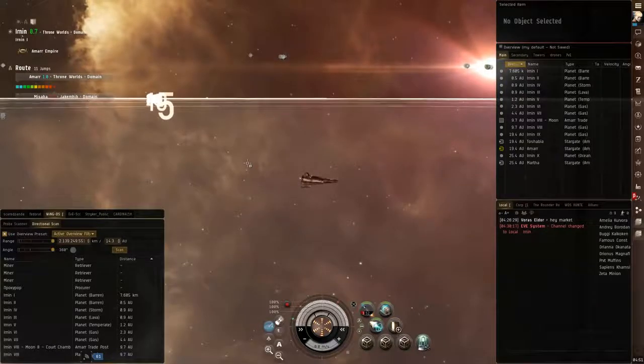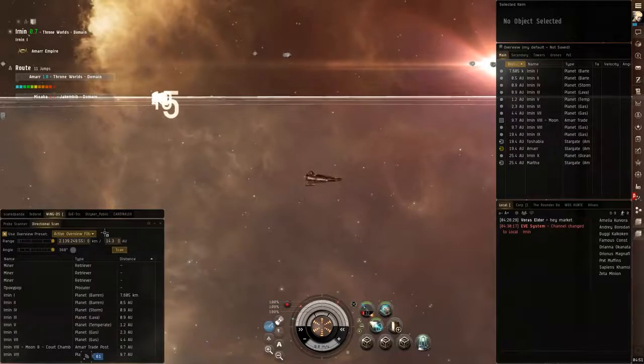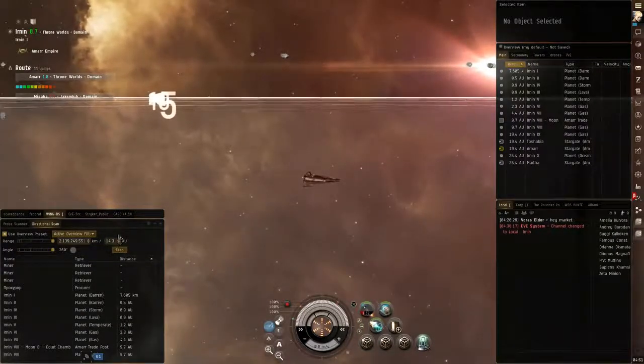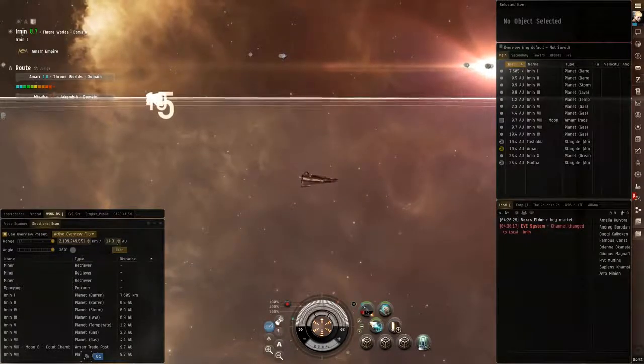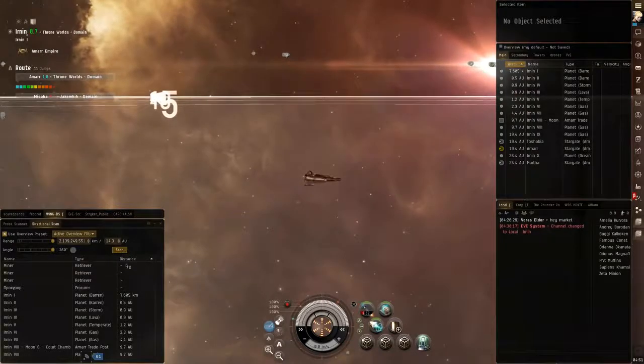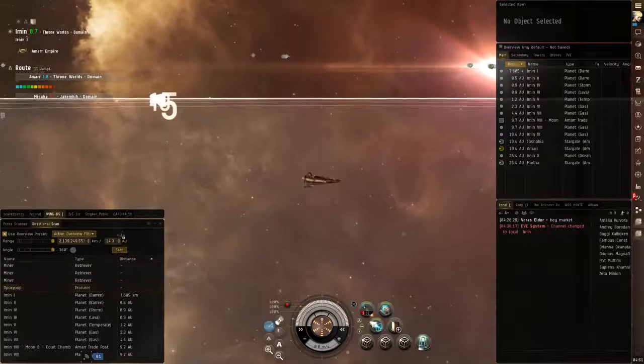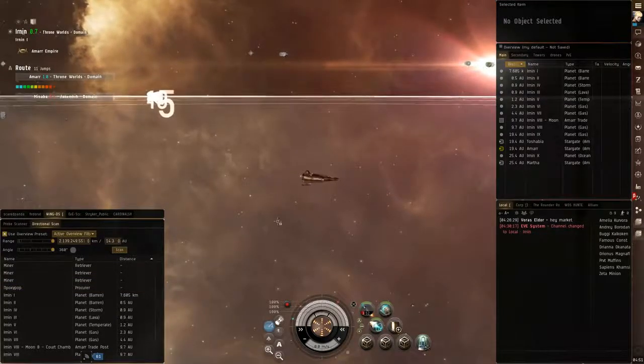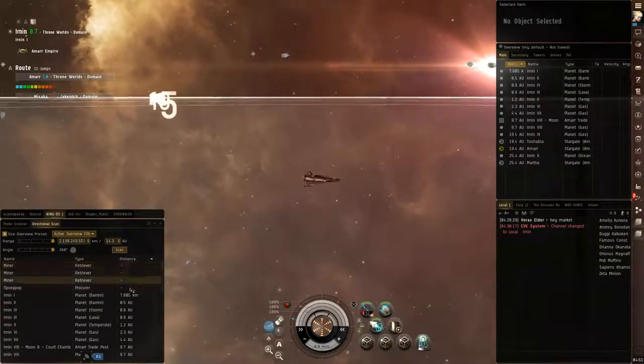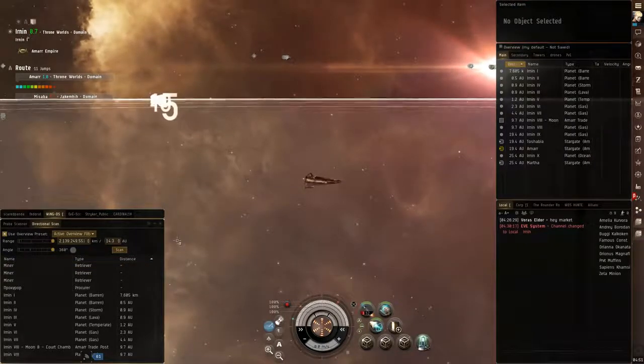In order to help you locate ships in-game, the game gives you this tool. You can see it in this window down here in the lower left-hand corner of the screen. This is called your directional scanner. It has a maximum range of 14 astronomical units. You can set this to the max range and then click scan, and you can see that there are actually a few ships, three retrievers and one procurer, within 14 astronomical units of my ship right now. But they don't give me the distance that I am from these ships.